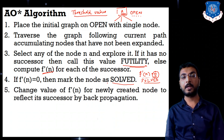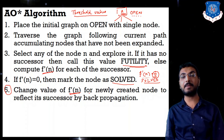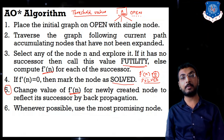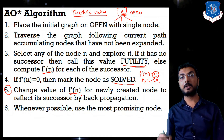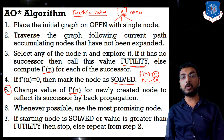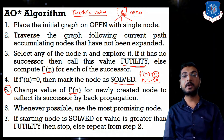Step 4: Change the value of f'(n) for newly created nodes to reflect their successors by backpropagation. Step 5: Whenever possible, use the most promising node — in AO* we do not always require the node with the least heuristic value, as we may also consider the ethical path. If the starting node is solved, or its value is greater than futility, stop; otherwise repeat from step 2.